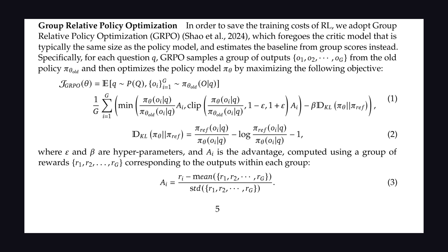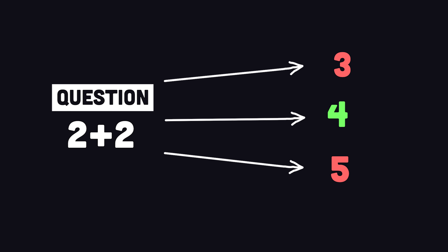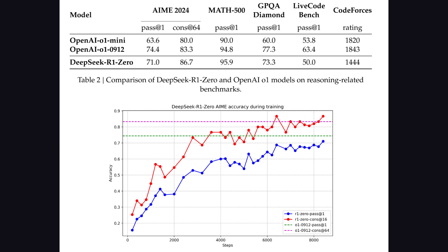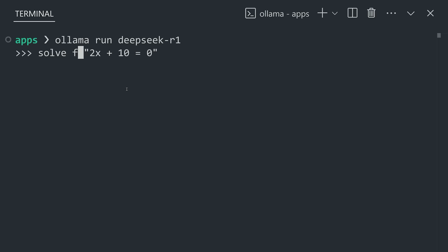DeepSeek also released a brief paper that describes the reinforcement learning algorithm. It looks complicated, but basically, for each problem, the AI tries multiple times to generate answers, which are called outputs. The answers are then grouped together and given a reward score, so the AI learns to adjust its approach for answers with a higher score. That's pretty cool, and we can see the model's actual chain of thought if we go ahead and prompt it here with Ollama.